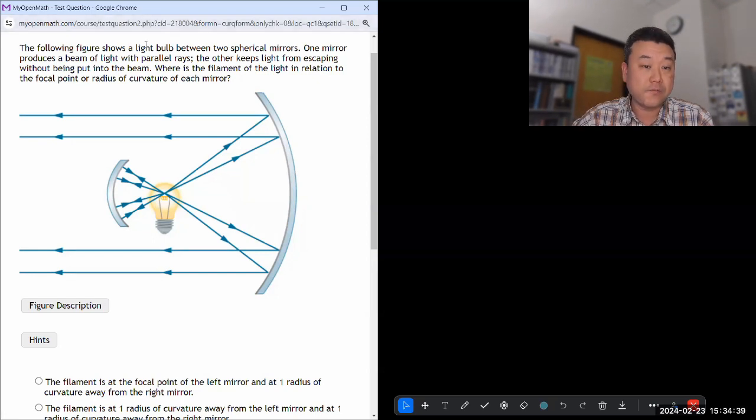So this says the following figure shows a light bulb that's between two spherical mirrors. That's interesting. So one mirror produces a beam of light with parallel rays. I guess that's the one on the right. Okay, the other keeps light from escaping without being put into the beam. That's interesting. Whereas the filament of the light in relation to the focal point or radius of curvature of each mirror.